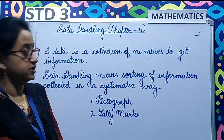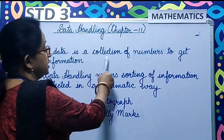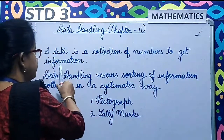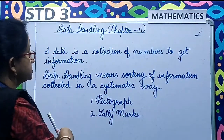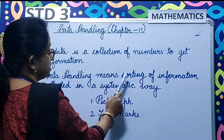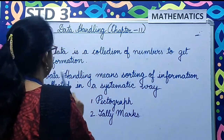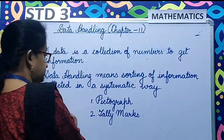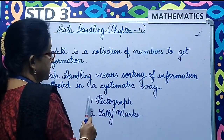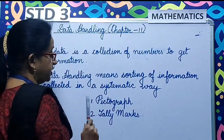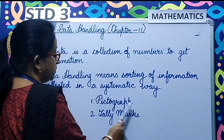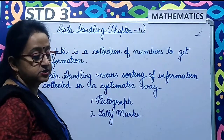What is data, children? Data is a collection of numbers to get information. Now what is data handling? Data handling means sorting of information collected in a systematic way. There are two ways to do it: one is pictograph and the other one is tally marks.